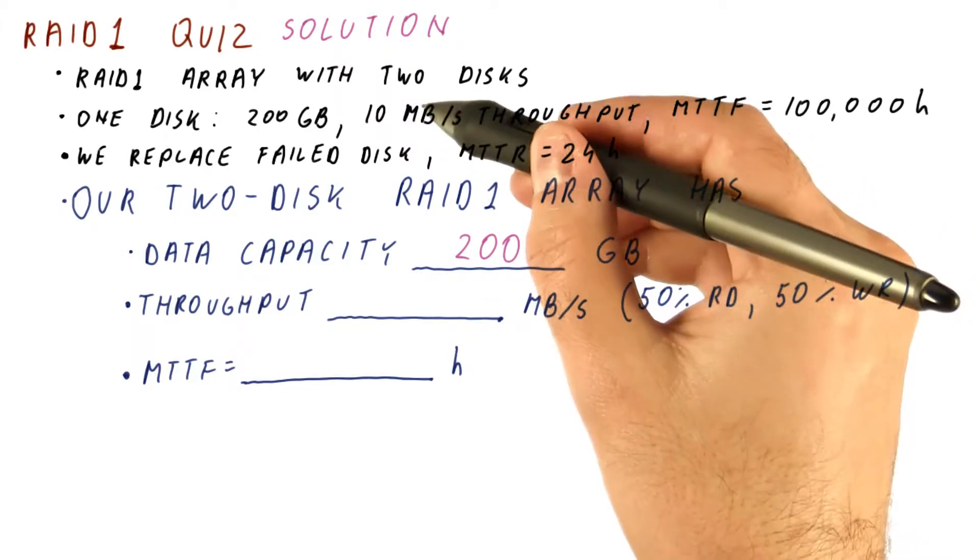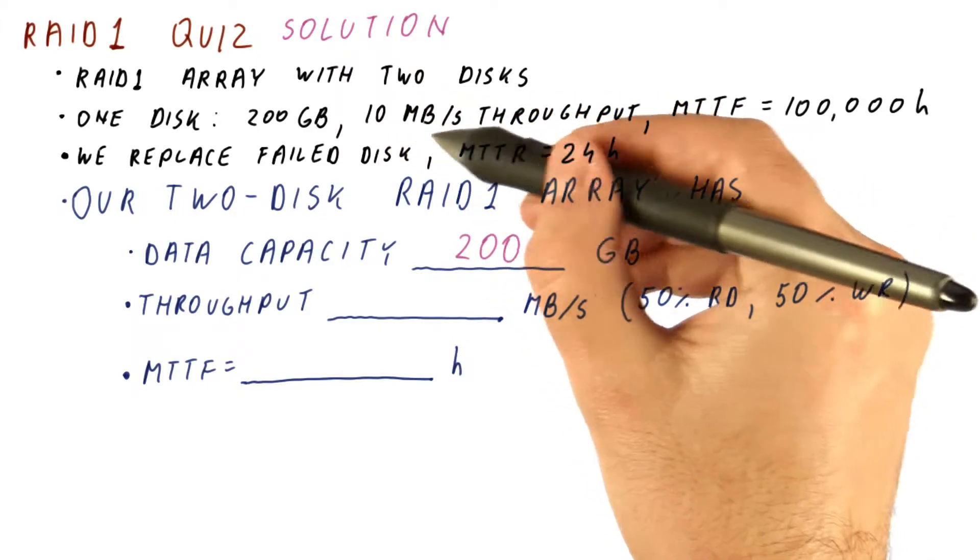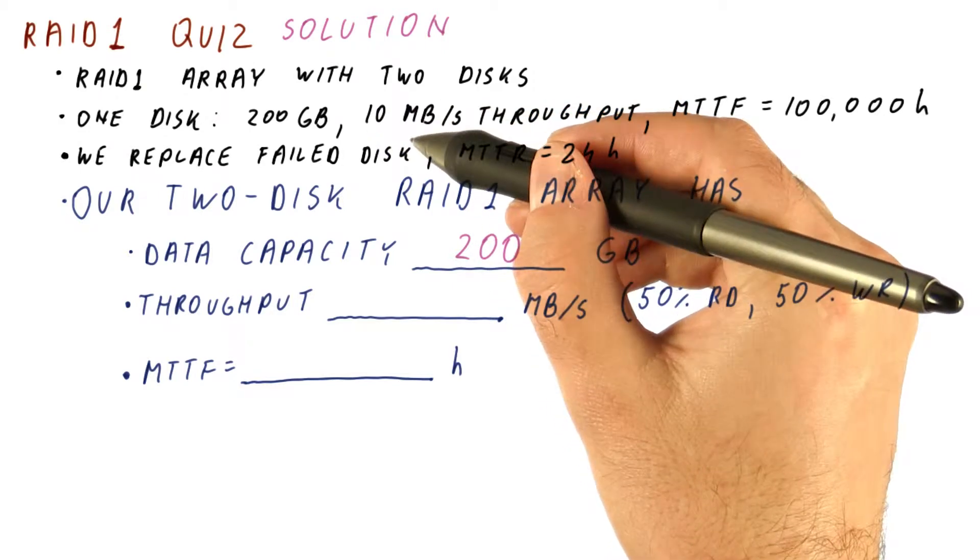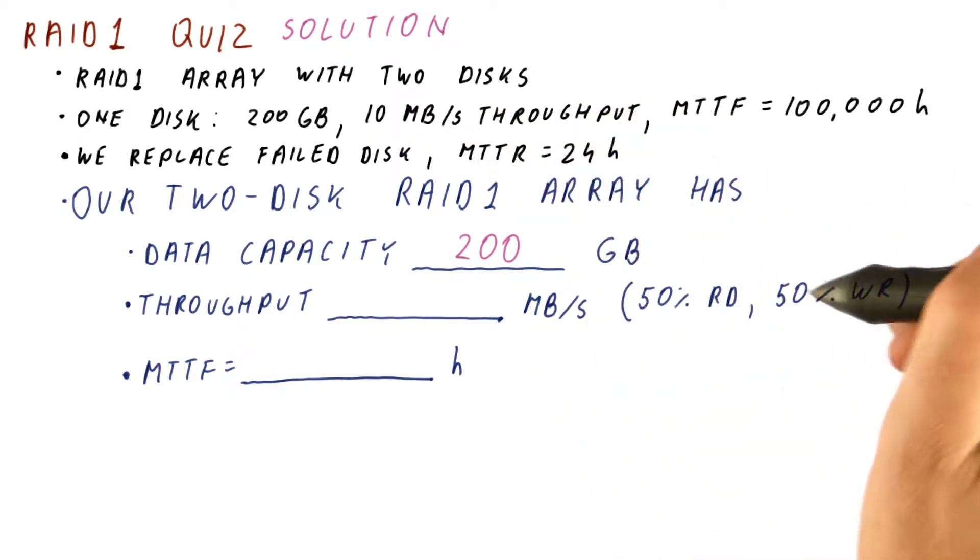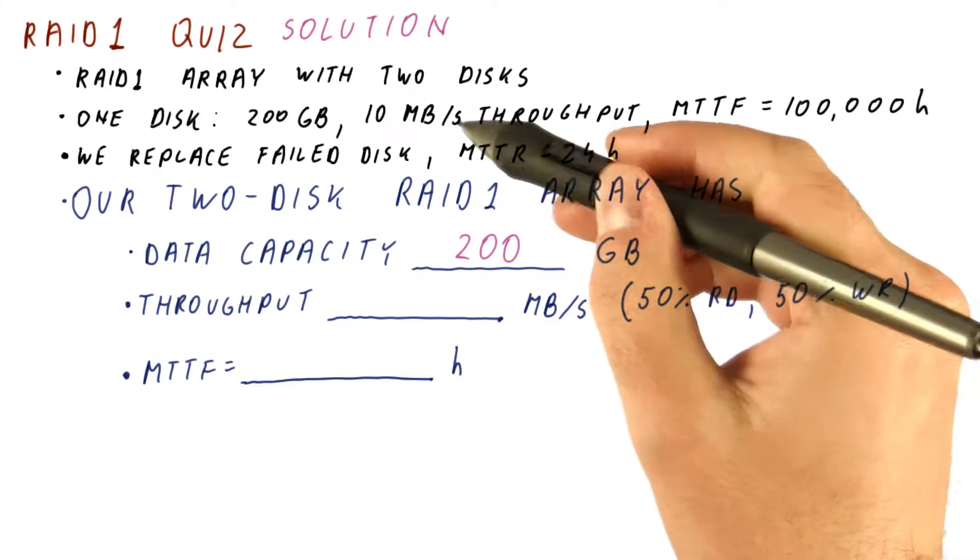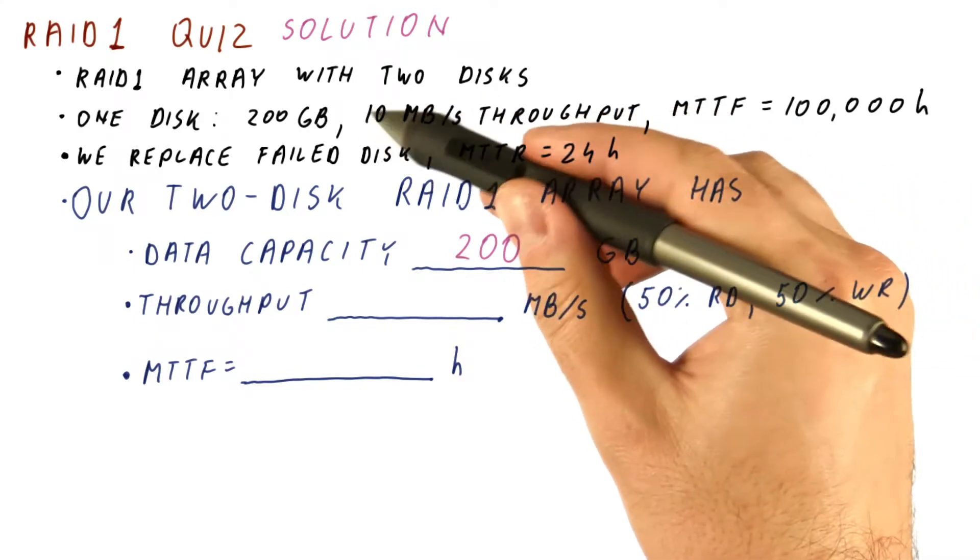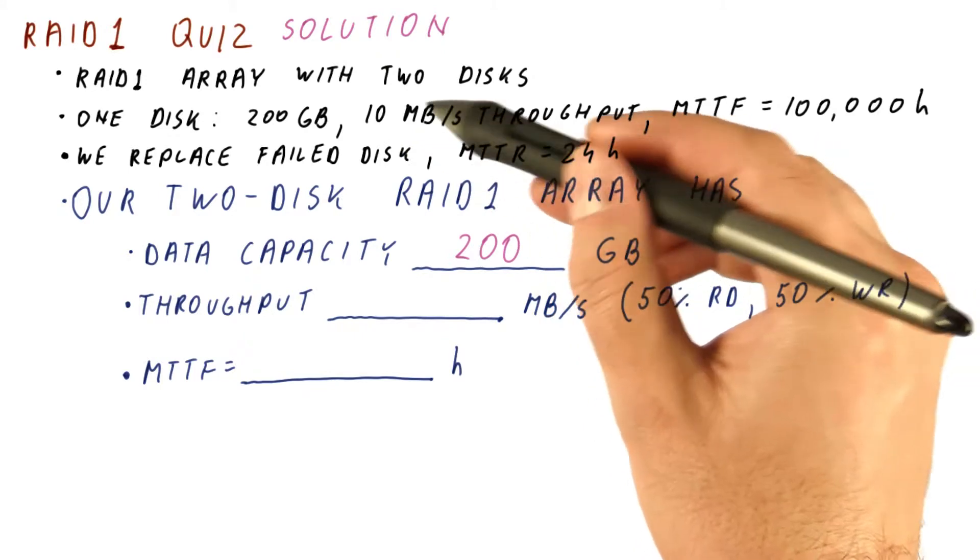The throughput when we are reading is twice the throughput of a single disk, because we can issue reads to both disks at the same time. But when we are writing, we are writing to both disks at once, so the throughput for writing is only 10 megabytes per second.